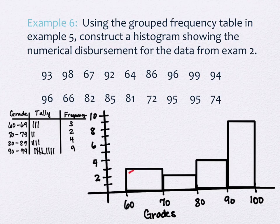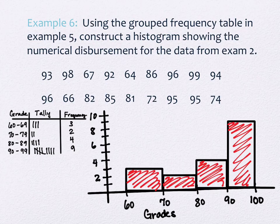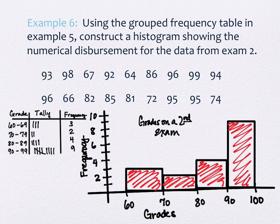We need a title for this histogram. You'll also see these often colored in — we'll see that when we look at double bar charts or double frequency histograms next time. I need labels on both axes: the bottom axis says 'Grades' and the left axis says 'Frequency.' The title is 'Grades on a Second Exam.' We'll pick back up there next time.